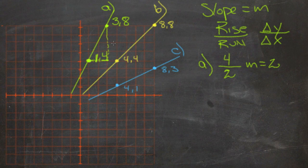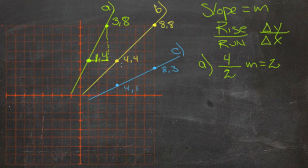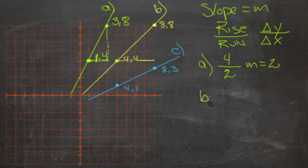So then for our second line, b, we're going from the point 4, 4 to the point 8, 8. So our change in x, our run, is 4.